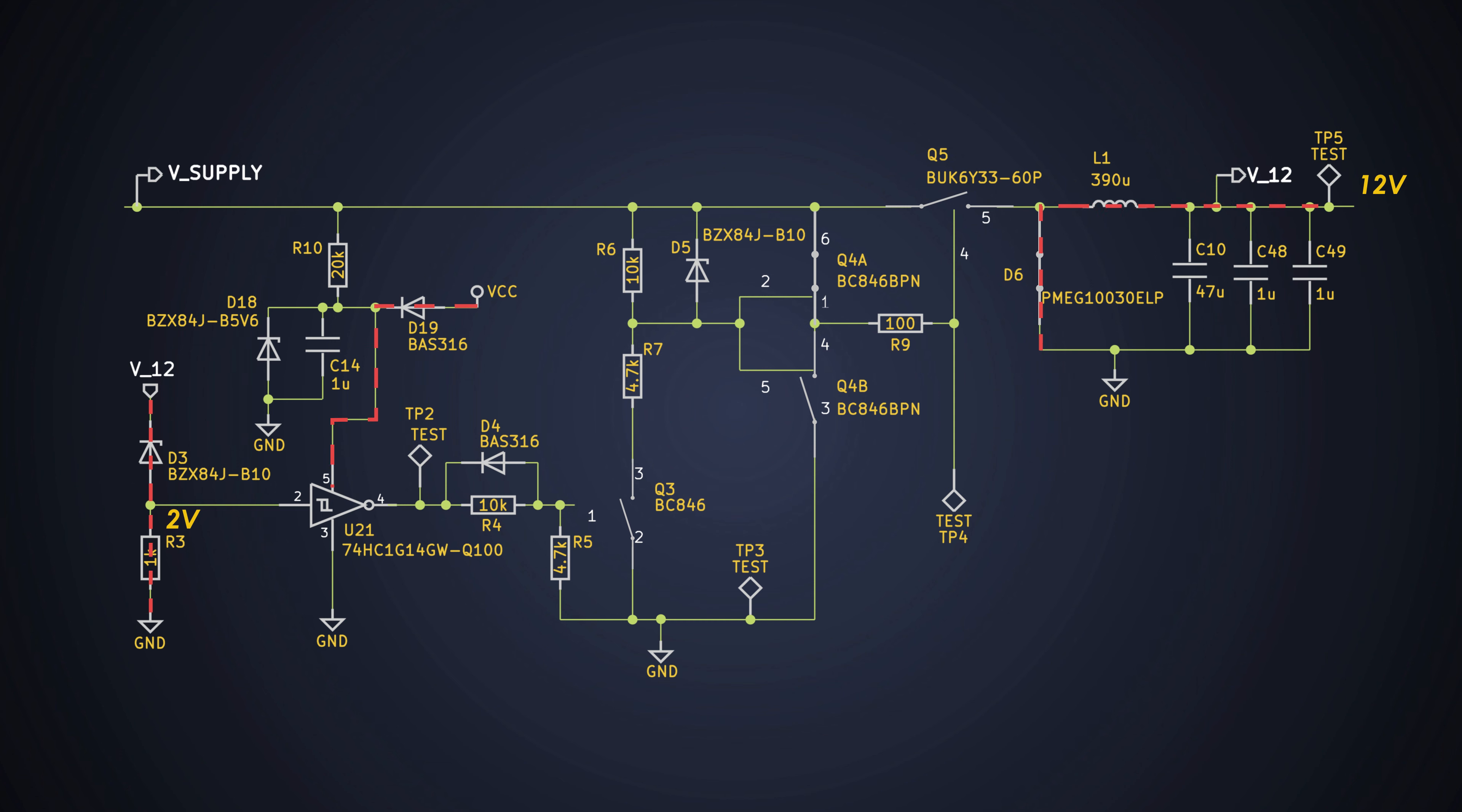Now, when the output voltage goes below 12V, the U21 would get 1. And Q3 will turn on. Consequently, Q4B will turn on, which will turn on the MOSFET Q5. And this particular cycle keeps on repeating, which provides the PWM to the MOSFET Q5.